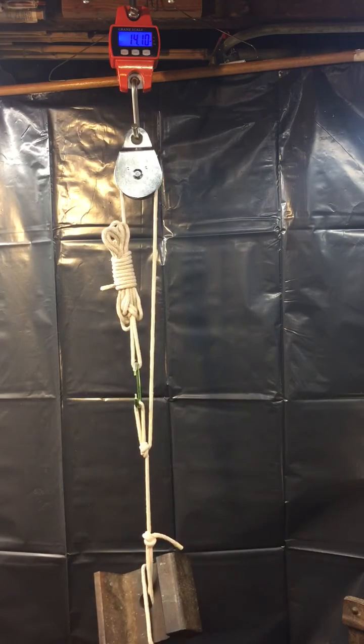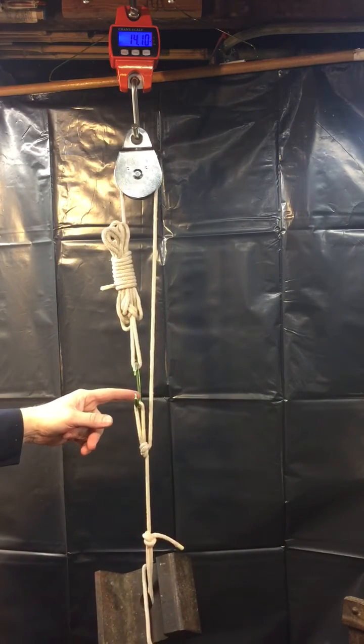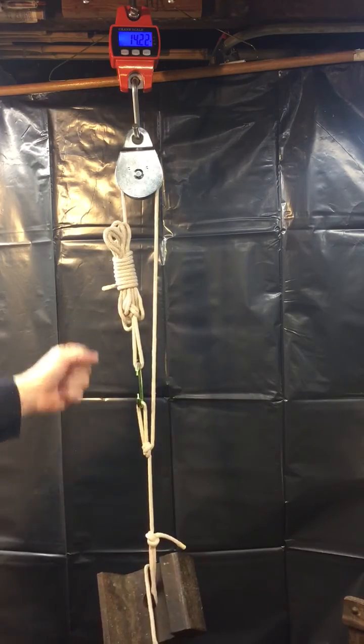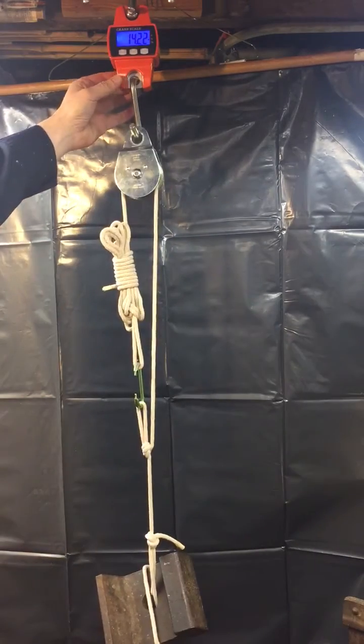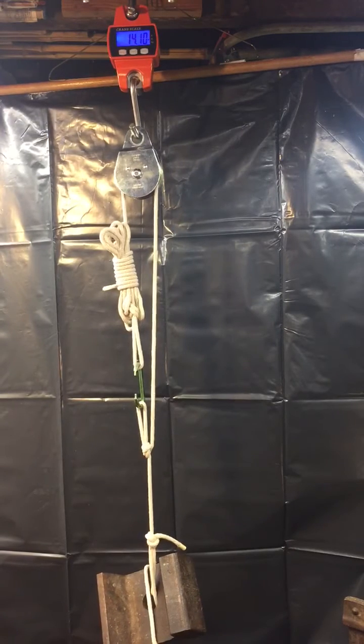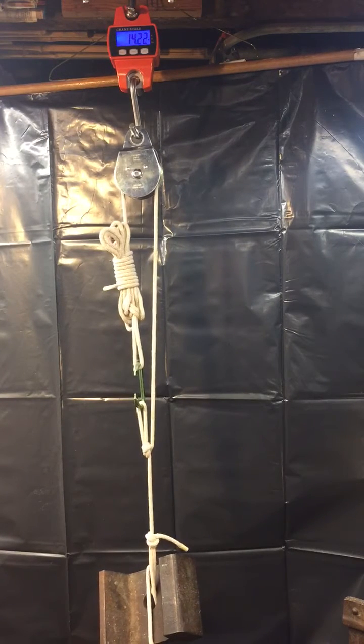Now, what I'm going to do is I'm going to remove the carabiner. I'm just going to pull this rope off the carabiner and hold it. What's going to happen to the scale? Well, the scale, like I said, right now it's at 14 pounds. Will it go up? Will it go down? I want you to think about it for a second.